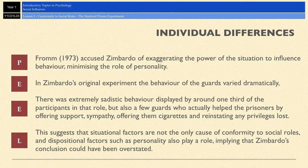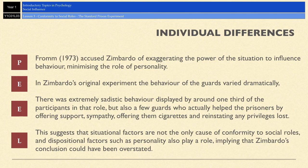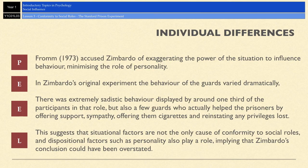The first evaluation point is that Zimbardo didn't take individual differences into account. Fromm in 1973 accused Zimbardo of exaggerating the power of situational forces to influence behavior and ignoring personality. In the Stanford prison study, the behavior of the guards varied dramatically — some were extremely sadistic and cruel, others helped and were sympathetic to prisoners, and others simply followed the rules exactly as asked. This suggests that situational factors aren't the only cause of conforming to a social role; personality also plays a role, meaning Zimbardo's conclusions could have been overstated.